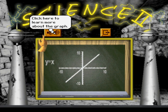This is a graph of the equation y equals x. Because the line rises along the y-axis at the same rate as it runs along the x-axis, we say that the line has a slope equal to one.